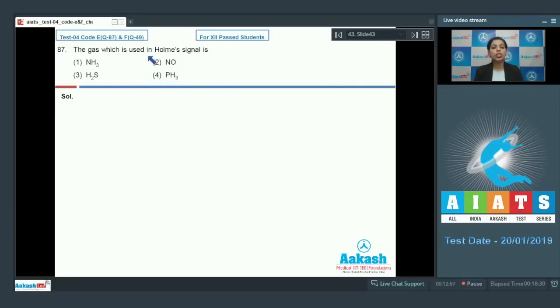Question number 87: The gas which is used in home signal is phosphine gas, PH3. That's given here in option 4. Basically, the spontaneous combustion of phosphine gas is used as home signal. That's why option 4 is the correct one.